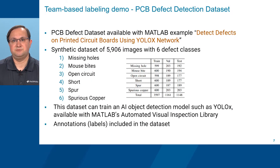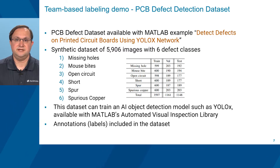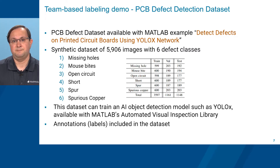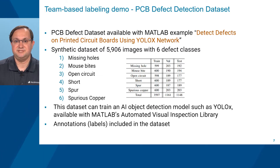The team-based labeling demonstration we'll be discussing today makes use of a synthetically-generated PCB defect detection dataset. This dataset is highly relevant to complex, domain-specific technical data that is often found in practice. The dataset contains 5,906 images with 6 defect classes and is available as part of the MATLAB example 'Detect Defects on Printed Circuit Boards Using YOLO-X Network.' This network is available as part of MATLAB's automated visual inspection library for Computer Vision Toolbox, free to experiment with for all customers. While this dataset is pre-annotated, we will be using the raw images to demonstrate human annotation of domain-specific technical imagery.